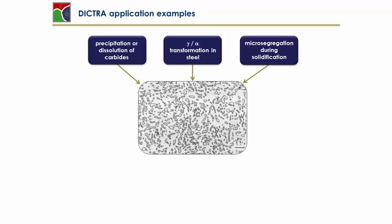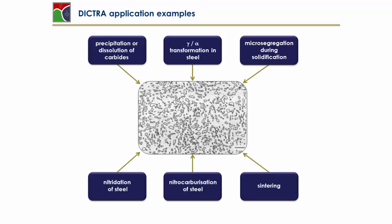There are many other application examples of DICTRA which will not be detailed here. But there are mean field approximations which also allow to describe precipitation or dissolution of carbides and many other areas of interest.